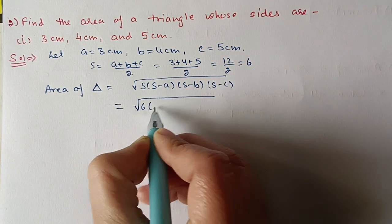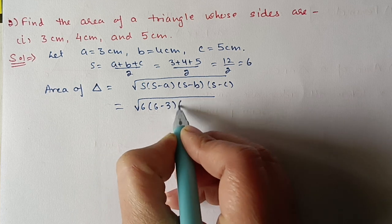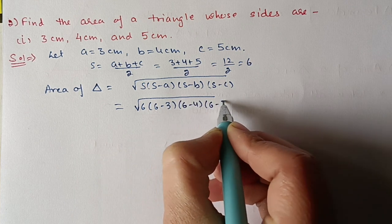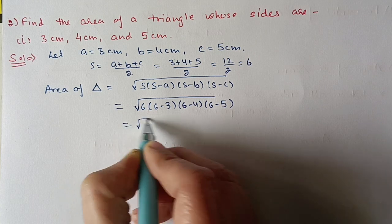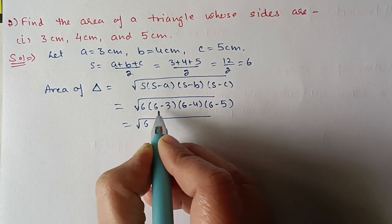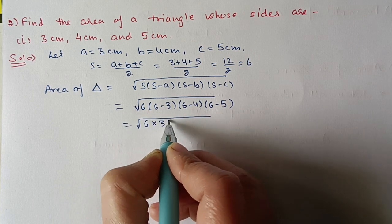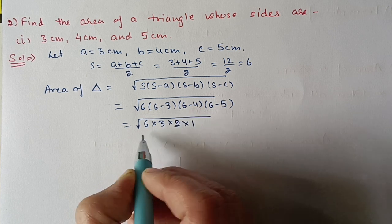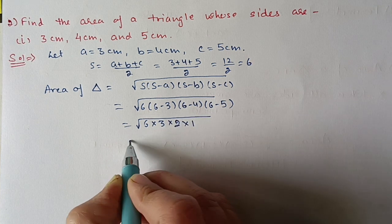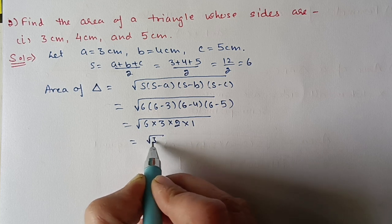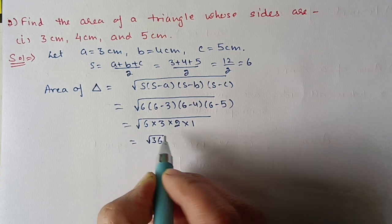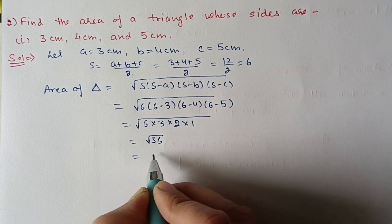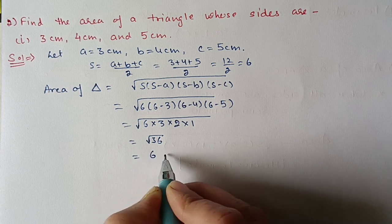Area = √[6 × (6−3) × (6−4) × (6−5)] = √[6 × 3 × 2 × 1] = √36 = 6. So the area is 6 cm².